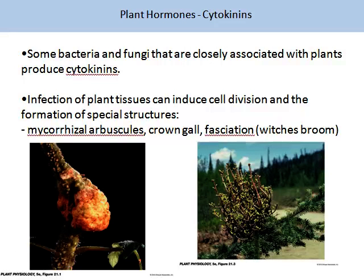Some bacteria and fungi closely associated with plants produce cytokinins. Infection of plant tissues can induce cell division and the formation of special structures. For example, infection by the microbe Agrobacterium, or crown gall, causes fasciation. Fasciation is an abnormality in a plant in which a cell enlarges into a flat, ribbon-like shape, resembling several stems fused together. This infection also occurs in witch's broom.